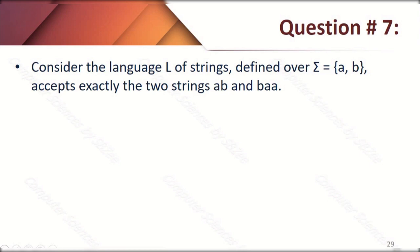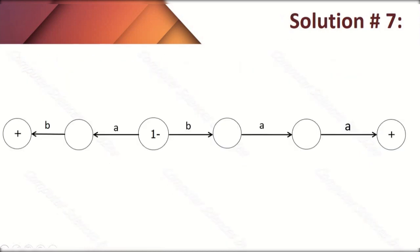Question number seven: consider the language L of strings defined over sigma {a, b} that accepts exactly two words: 'BAA' and 'AB'. We build a machine that accepts these two words — 'B', 'A', 'A' and 'A', 'B'. All other words are sent into the dead state, in the same way as done in question six.